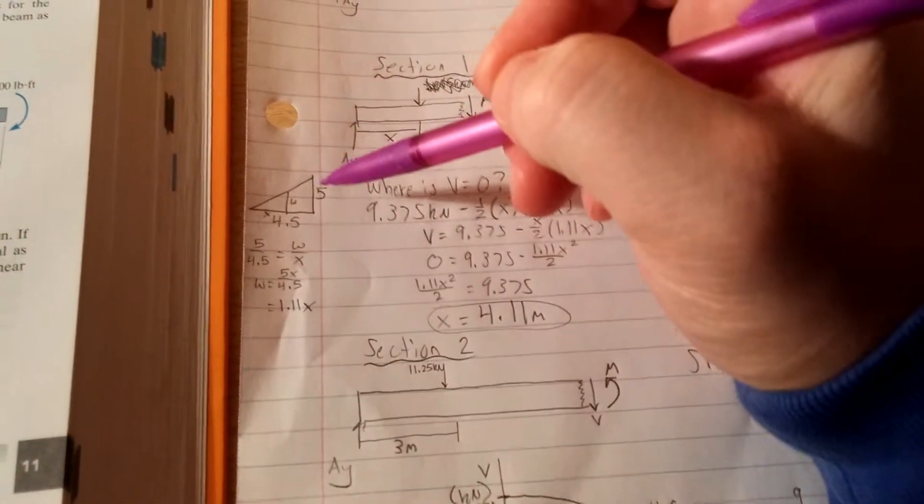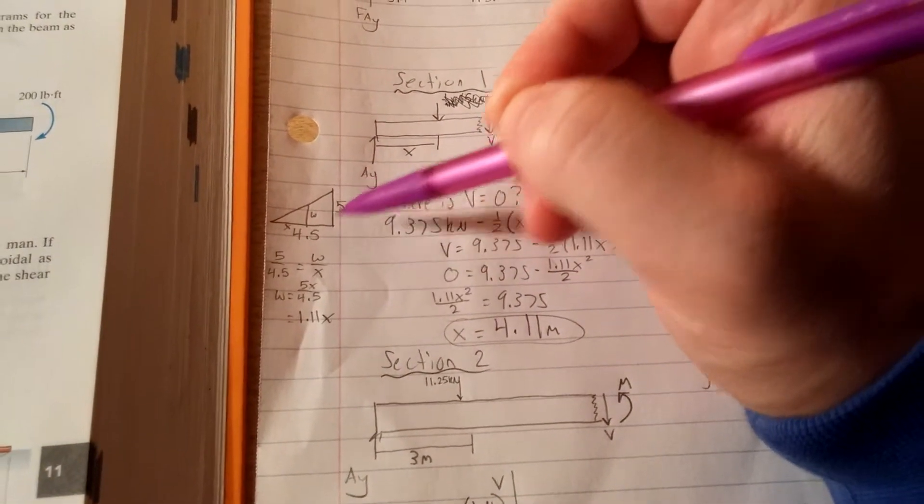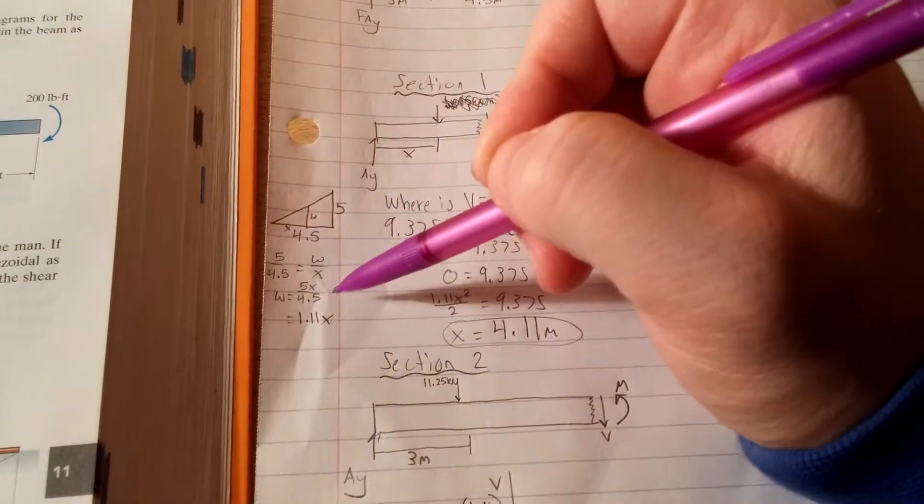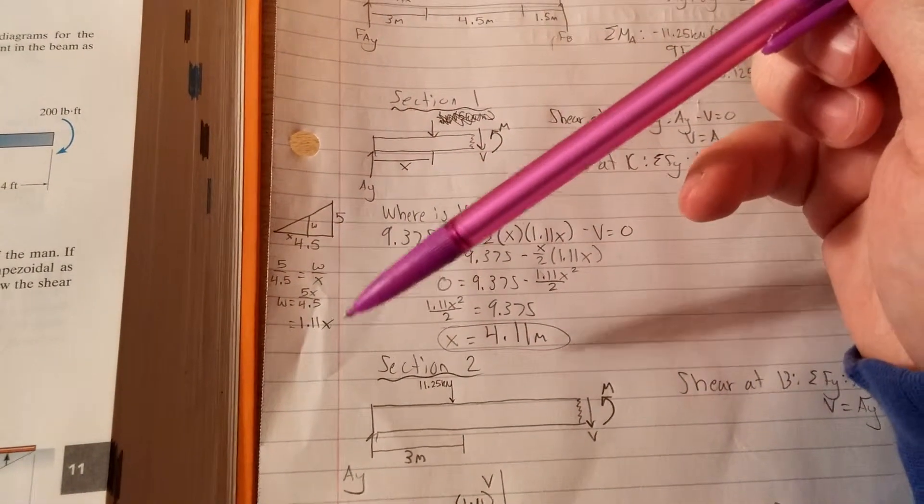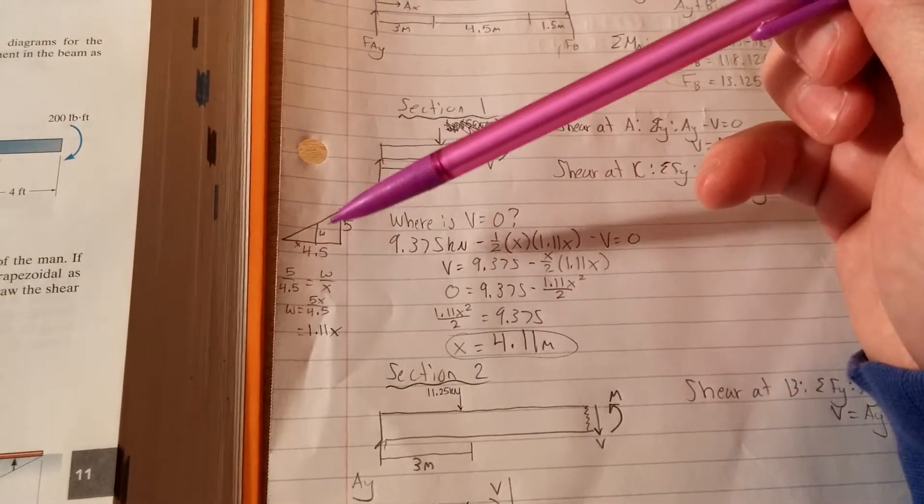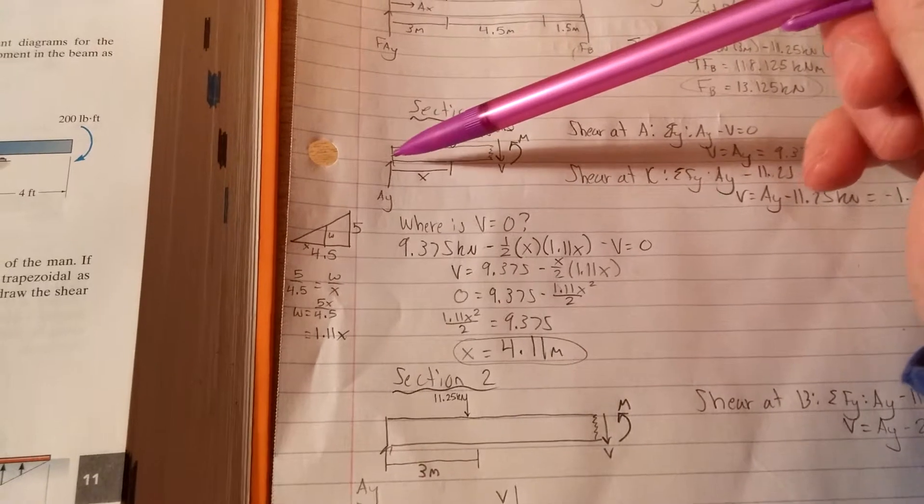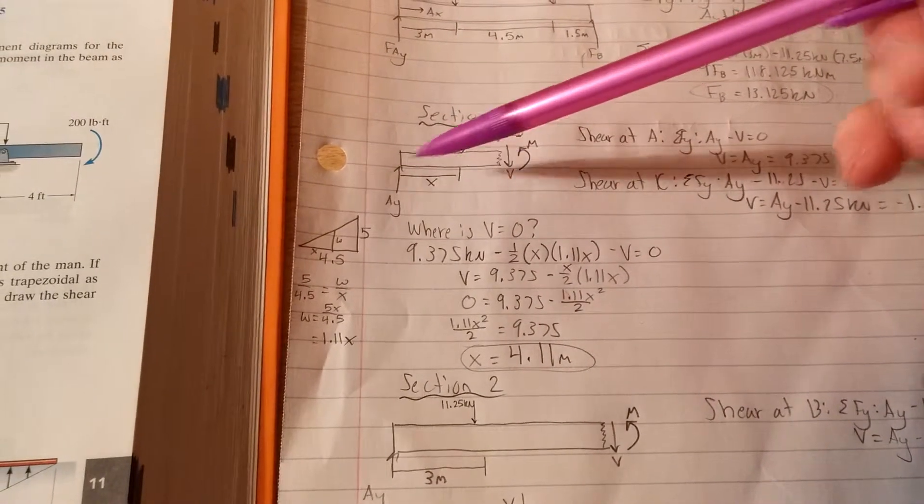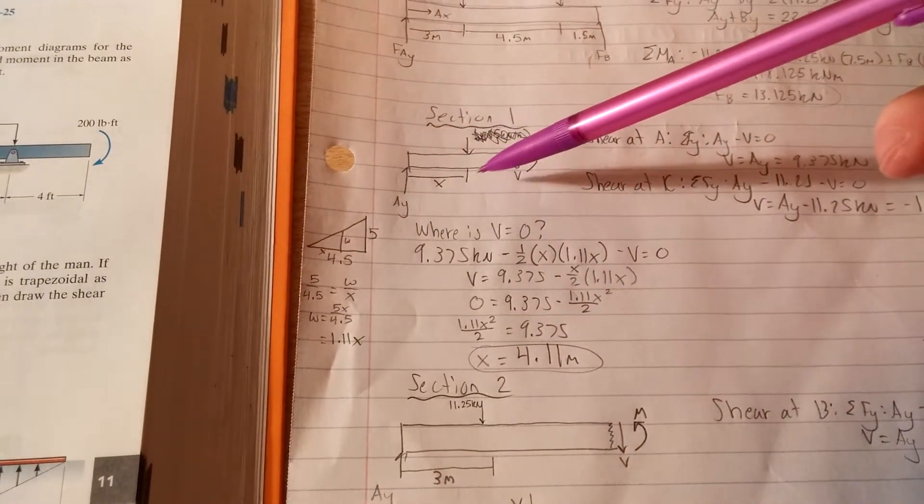You can relate them the same way. So 5 is to 4.5 as W is to X. Once you solve for W, because you want the height of that - we're going to know that the X is going to be however far along, and we can arbitrarily call it X. But we want that height.